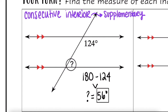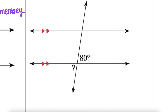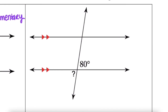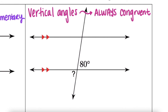Let's try the next one. These are vertical angles, and vertical angles are always congruent regardless of whether the lines are parallel or not. So if this angle has a measure of 80 degrees, the vertical angle across from it is also 80 degrees.